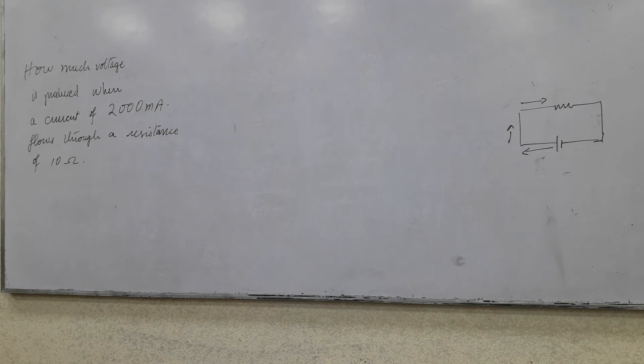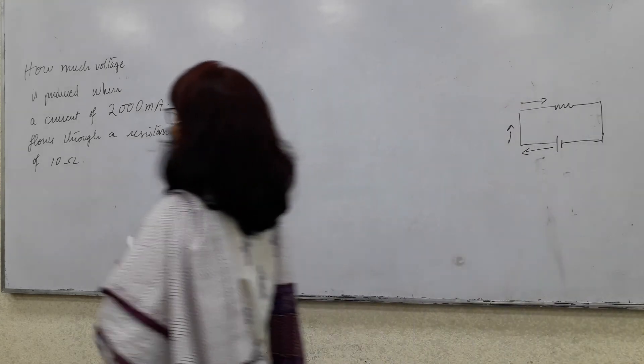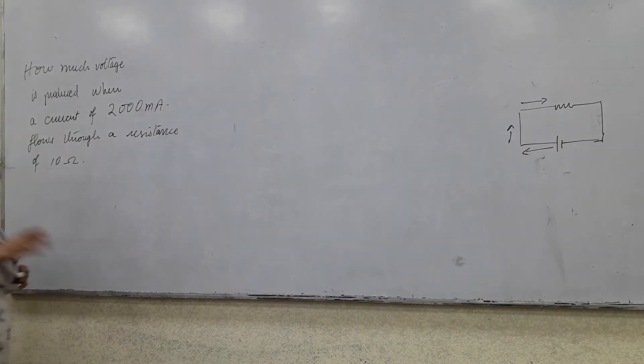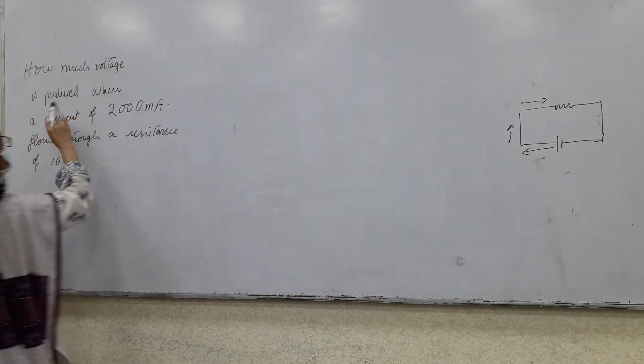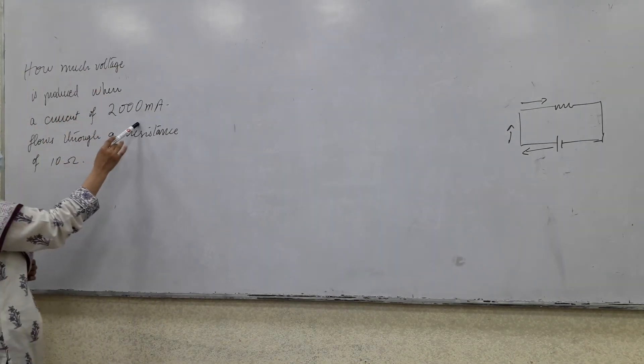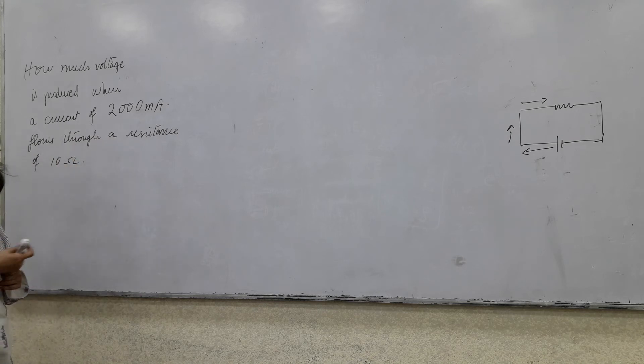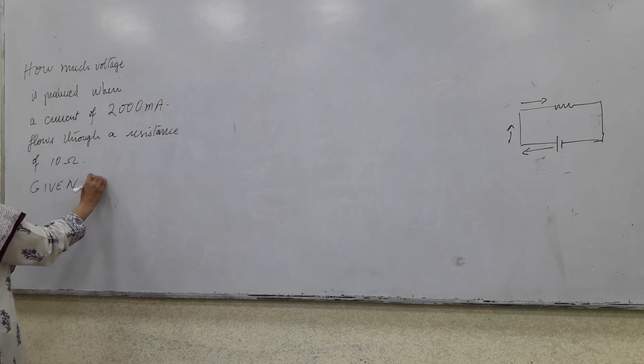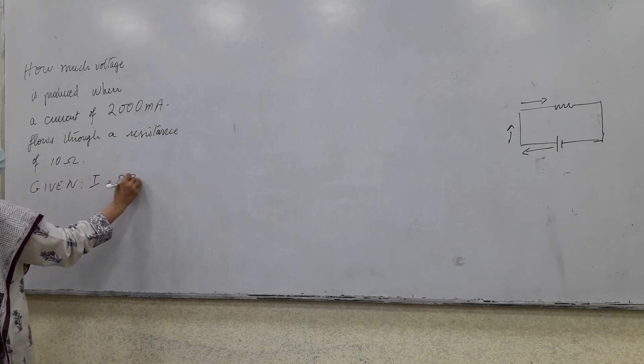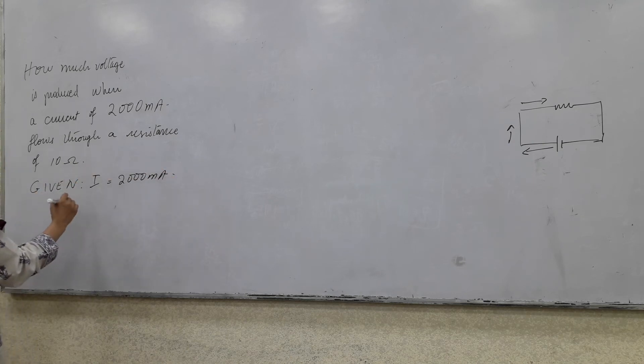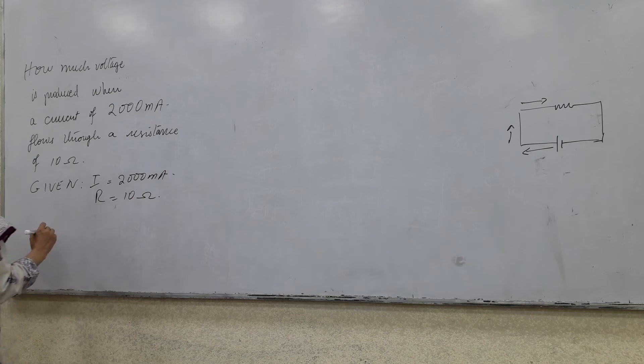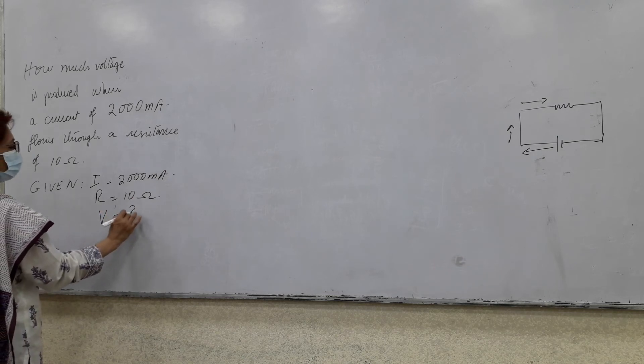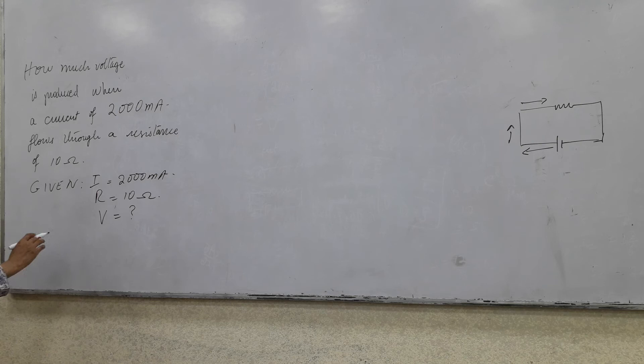The formula is simple: V is equal to IR. Can we all discuss it? So how much voltage is produced when a current of 2000 mA flows through a resistance of 10 ohms? Let's start writing the given. We have current of 2000 mA, we have resistance of 10 ohms, and we have to find the voltage.